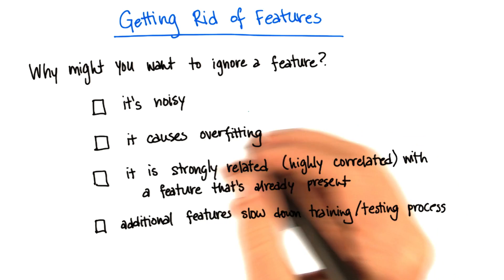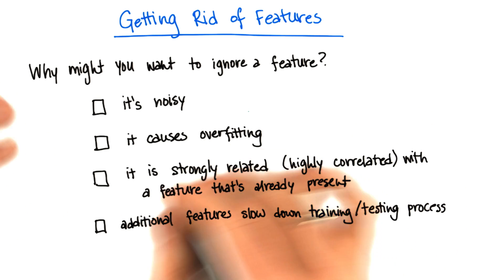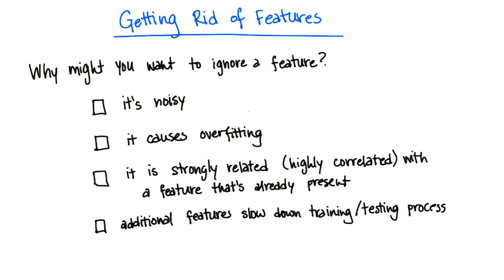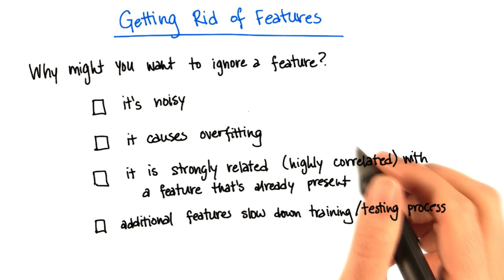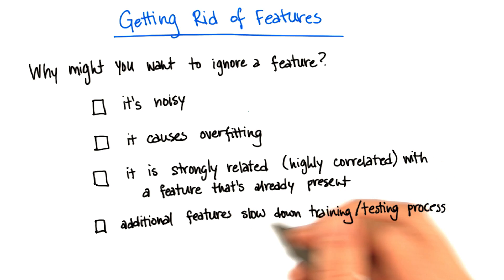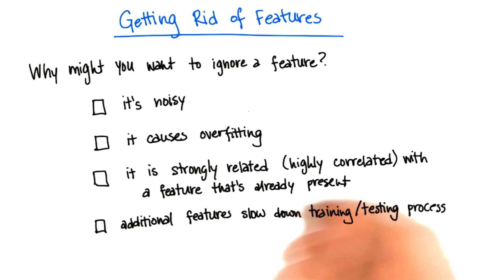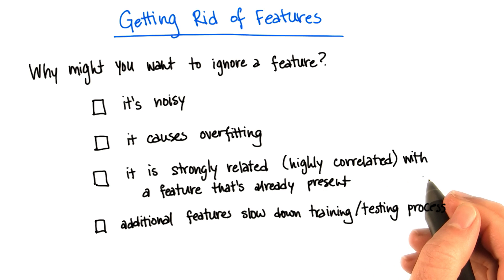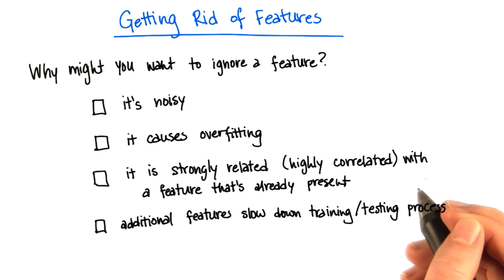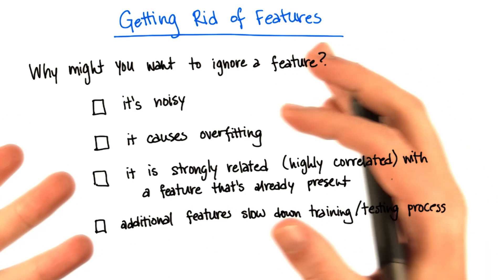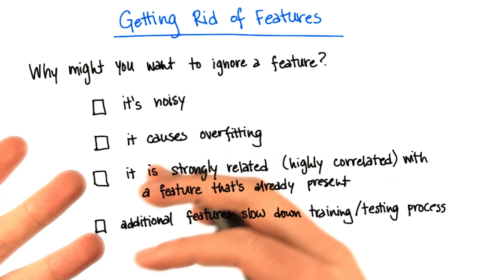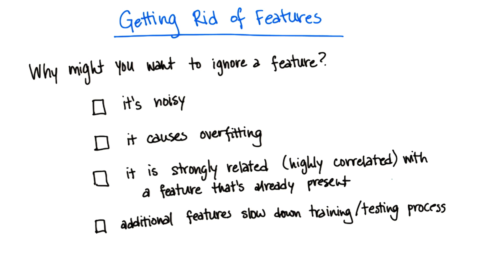Perhaps one problem with a feature is that it's noisy — it's hard to distinguish whether it's reliably measuring what you want it to be measuring. Another possibility is that a feature is causing your model to overfit. Maybe you think that the feature is strongly related, or what we call highly correlated, with a feature that's already present — so it's giving you information, but it's just repeating information already present in the form of another feature. And then additional features may slow down the training or testing process.